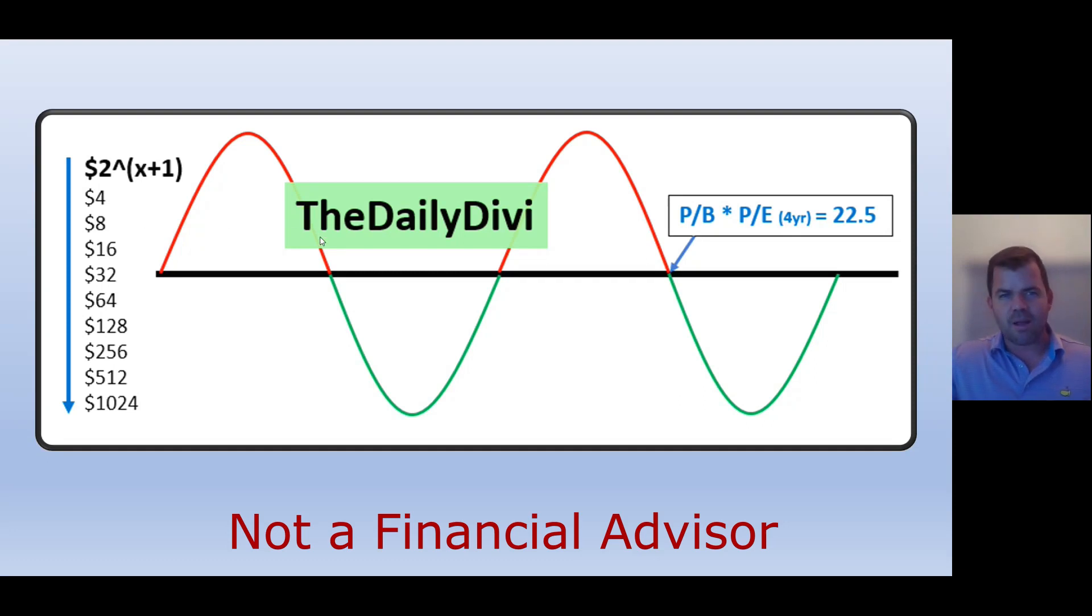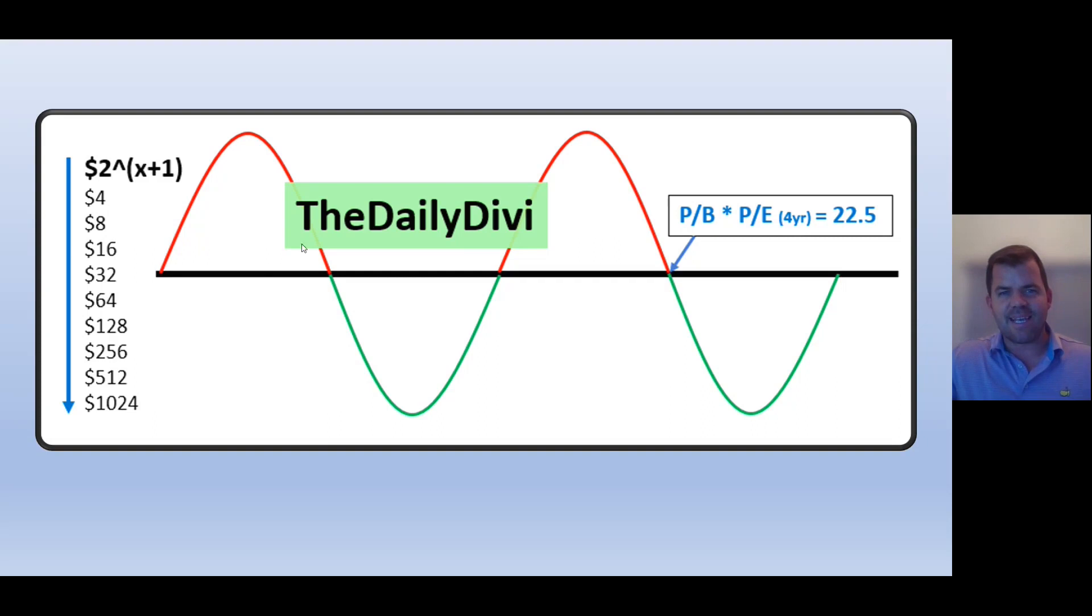Then I'm going to put $8 when it comes down again, then $16, then $32, and then $64, $128, $256, $512, $1024. And what I'm doing is I'm raising two to the next power. So two raised to one is two, two raised to two is four, two raised to three is eight, et cetera.